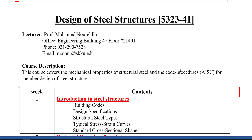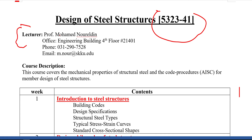Hello, this is Dr. Muhammad, and this is the course contents for Design of Steel Structures. The course code is 5323-41. My office is in the Engineering Building, fourth floor, room number 21401. Here is my phone number and email. Now let's talk about the course description itself.